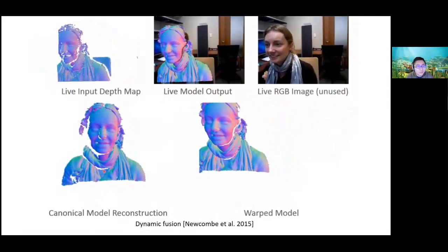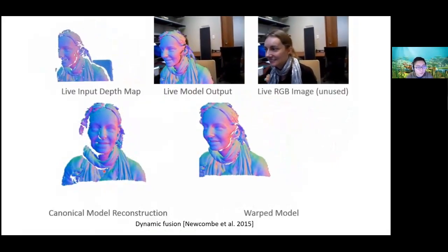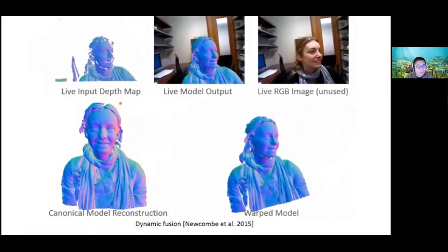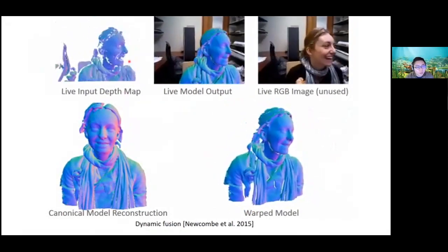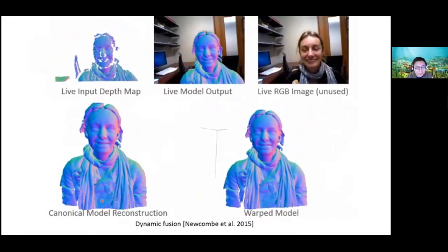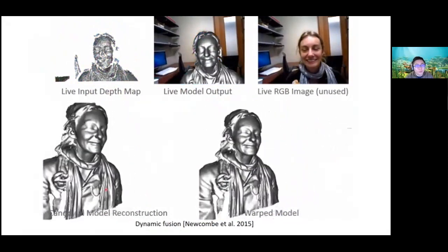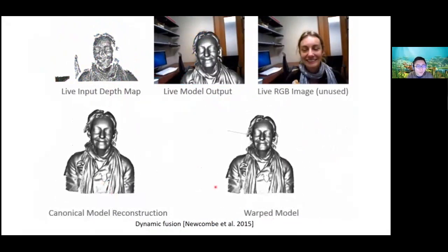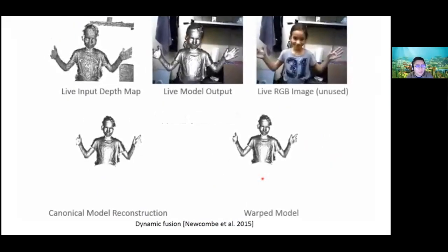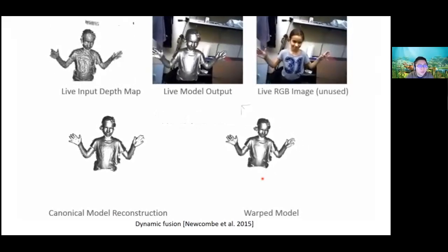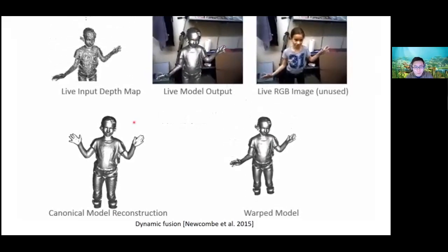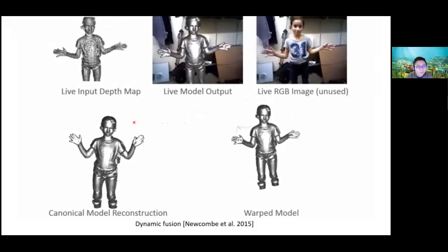This idea of using a static template with deformation has been popular in non-rigid reconstruction. A famous example is DynamicFusion: you take a depth video as input, construct a canonical frame model, and at each new frame warp the canonical template to match the new depth map. So you have non-rigid reconstruction with an inherent 3D template as the canonical that doesn't change with time.